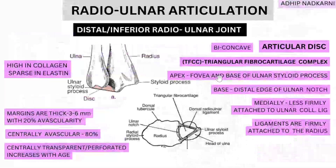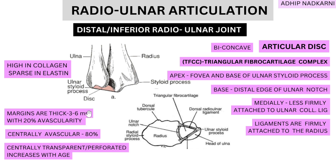Moving on to the distal radio-ulnar joint, the very important feature here is the articular disc, which is biconcave — concave on the side facing the radius and ulna, and also concave on the other side where it articulates with the carpal bones. This disc has a triangular shape and is fibrocartilage in structure, so it is called the triangular fibrocartilage complex, or TFCC — that is the name of this articular disc.